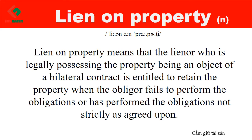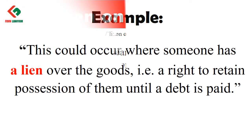Lien on property means that the lienor who is legally possessing the property, being an object of a bilateral contract, is entitled to retain the property when the obligor fails to perform the obligations or has performed the obligations not strictly as agreed upon. For example: producing a lien over the goods, i.e., a right to retain possession of them until a debt is paid.